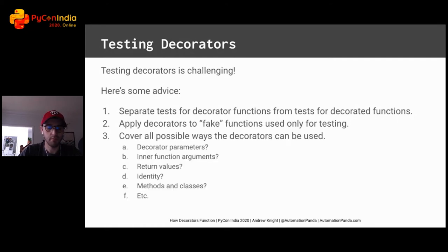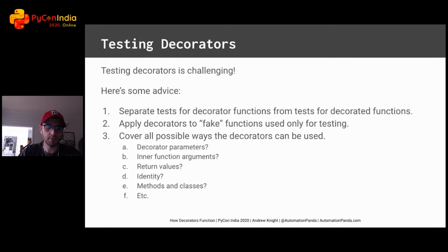Third, make sure decorators have test coverage for every possible way they could be used. Cover decorator parameters, decorated function arguments, and return values. Make sure the name and help are correct. Check any side effects like saved state. Try it on methods and classes as well as functions. With decorators, most failures happen due to overlooked edge cases.